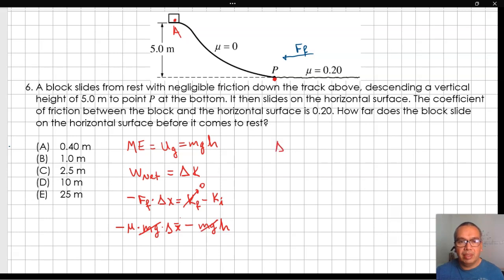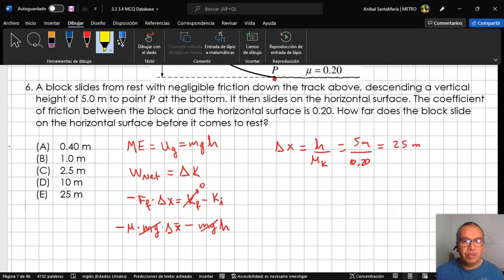The displacement is then equal to height divided by the coefficient of kinetic friction, or 5 meters divided by 0.20, which is equal to 25 meters. This corresponds to option E.